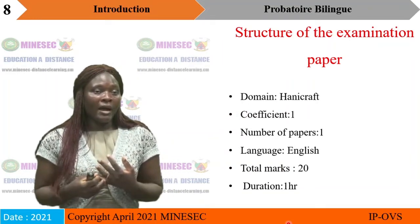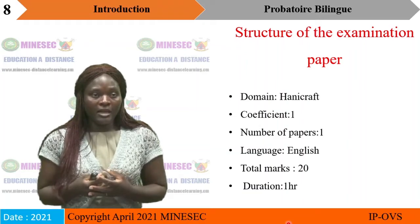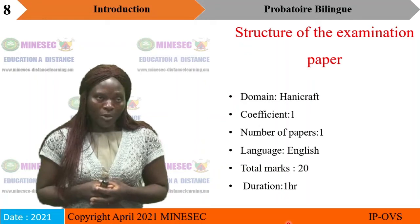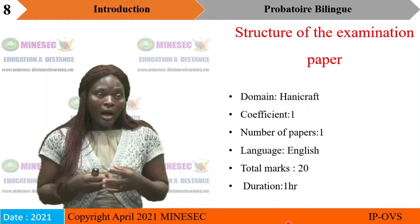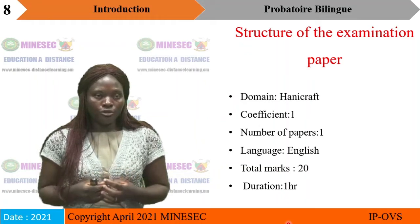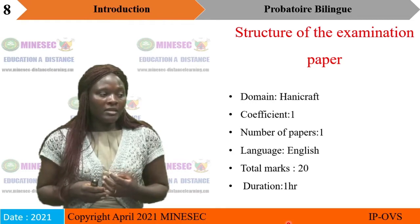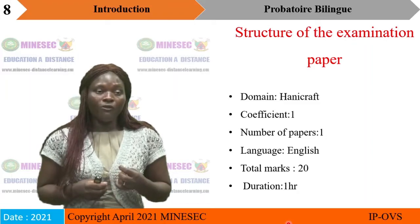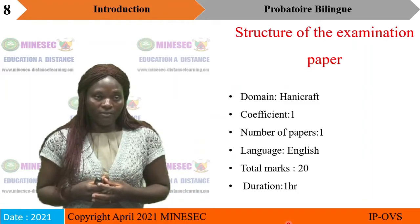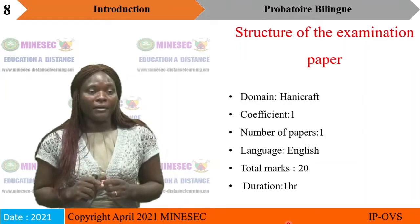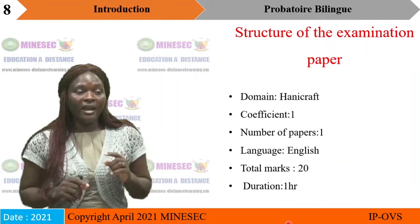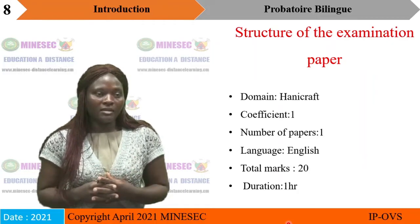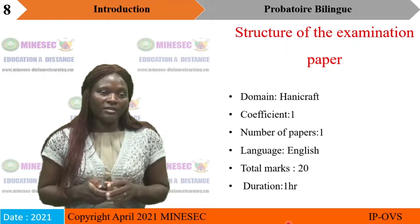The Probatoire Bileng manual labour paper is based on the domain of handicraft. It is a coefficient one subject with just one paper, written in English, with a total of 20 marks. This paper is written for one hour.